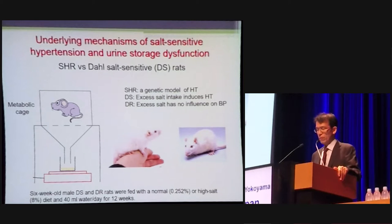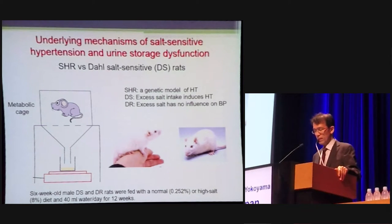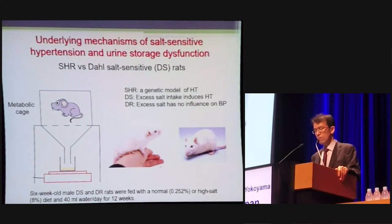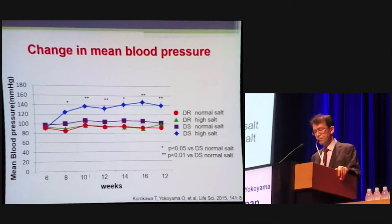SHR is a genetic model of hypertension; however, in humans, hypertension develops through both genetic and environmental factors including lifestyle factors such as high-calorie diet and excess salt intake. In our laboratory, we developed an animal model with hypertension due to excess salt intake. Excess salt intake induced hypertension in Dahl salt-sensitive (DS) rats but had no influence on blood pressure in DR rats. Six-week-old male DS and DR rats were fed normal or high-salt diet. A 20–30 mmHg increase in systolic and diastolic blood pressure was noted in DS rats after two weeks of salt loading.